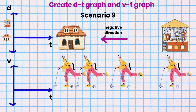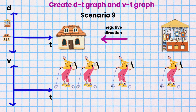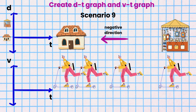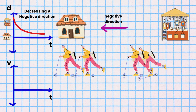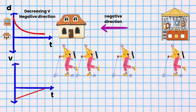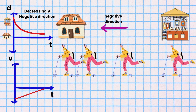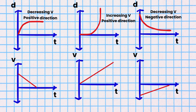Scenario 9. Isaac is scootering from the store back to his home. He has a decreasing velocity in the negative direction. The DT graph is a curve that gets flatter in the negative direction. The VT graph would be a line with a positive slope in the negative quadrant below the time axis. Here are our third set of 3 DT graphs that match the motion of the 3 VT graphs.